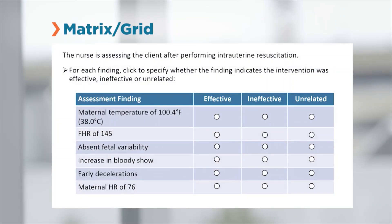Matrix Grid items allow you to select one or more answer options for each row and/or column. This type of item can be useful in measuring multiple aspects of the clinical scenario with a single item.